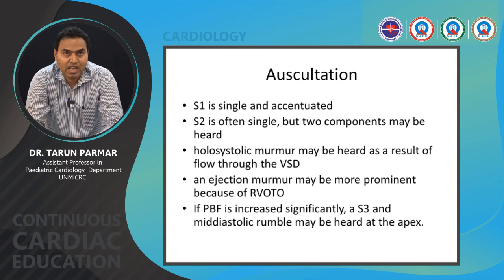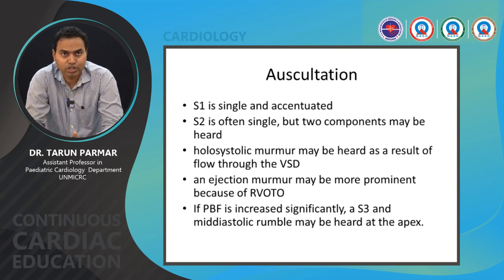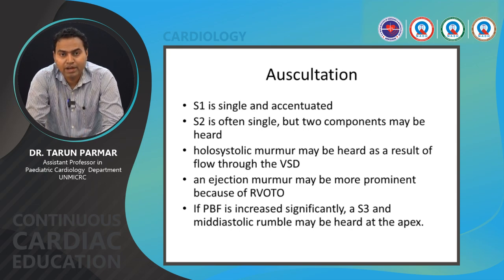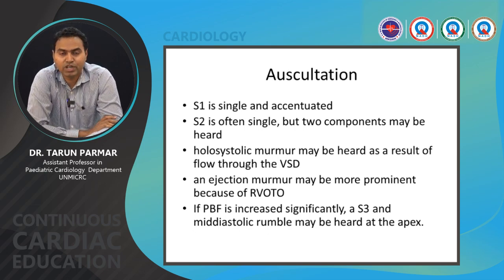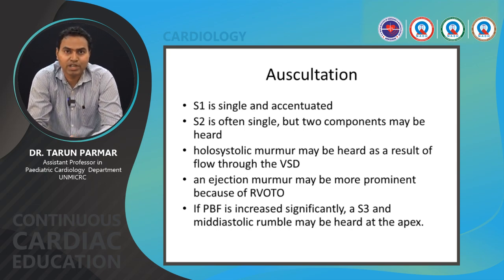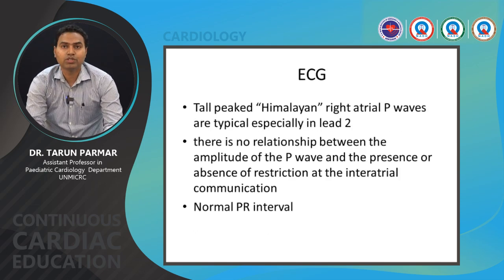On auscultation, S1 is single and accentuated because there is no tricuspid valve. S2 is often single due to associated pulmonary atresia or varying degrees of pulmonary stenosis, though two components may be heard. A holosystolic murmur from the VSD and an ejection systolic murmur through the RVOTO may be heard. In Type 1C or 2C situations with increased pulmonary blood flow, there is hyperdynamic circulation with S3 and a diastolic murmur at the apex.